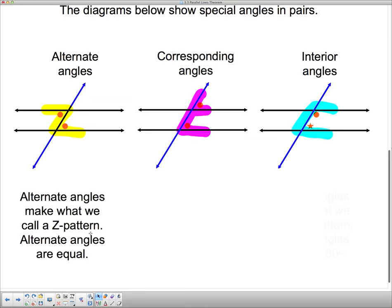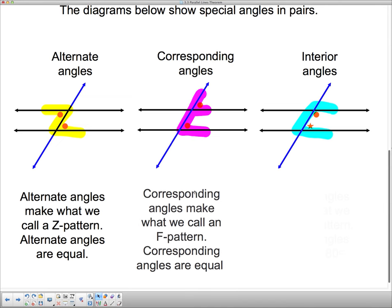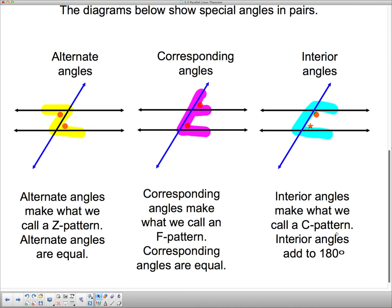Alternate angles make a Z pattern. Alternate angles are equal. Corresponding angles make what we call an F pattern. Corresponding angles are equal. And interior angles make what we call a C pattern. Interior angles add to 180 degrees.